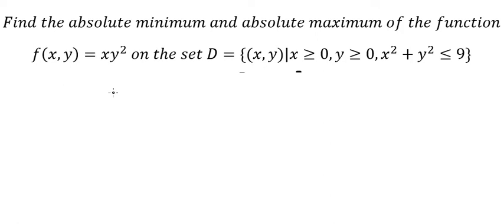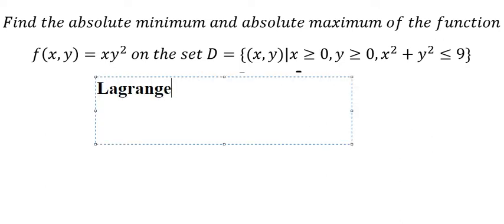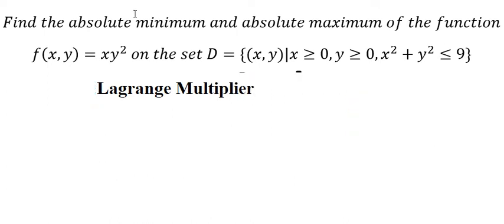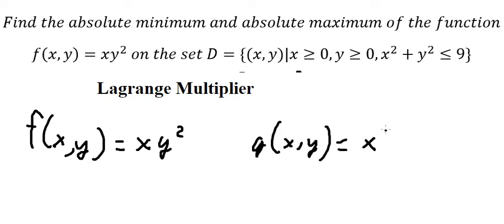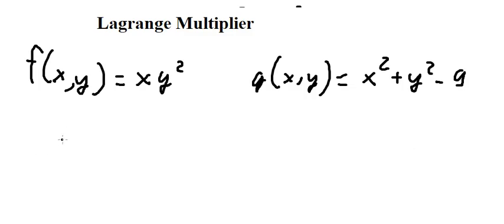Hello everybody. Today I will talk about calculus. The topic today is about Lagrange multipliers. I will show you how to apply the formula. We have f(x,y) and the constraint g(x,y) is x squared plus y squared minus 9, so we put 9 on the other side.